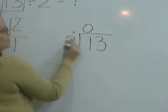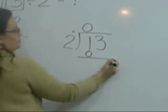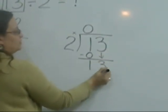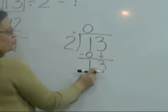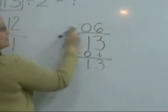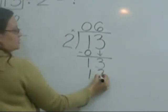0 times 2 equals 0. 1 minus 0 equals 1. I bring down my 1. 2 into 13 goes 6 times. 6 times 2 is 12.